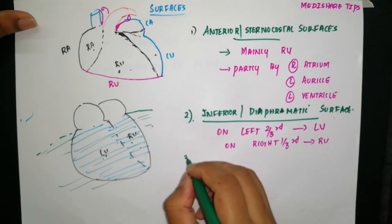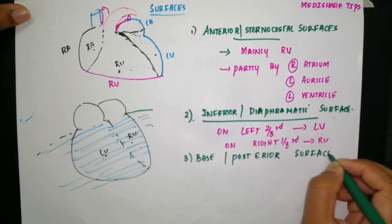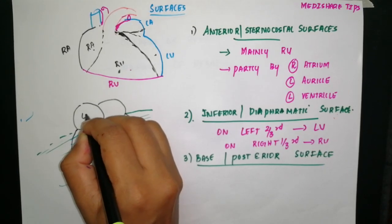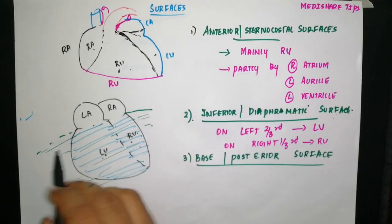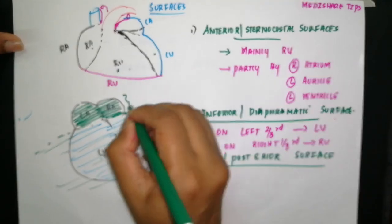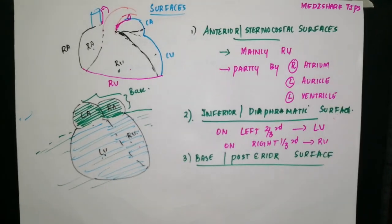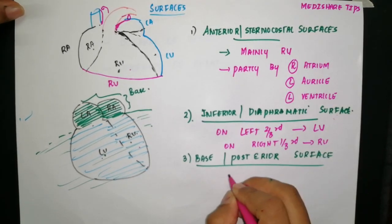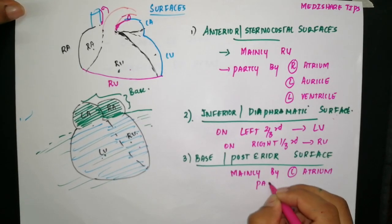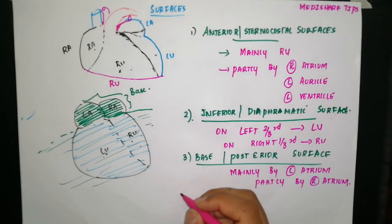The next surface is the base or posterior surface. Looking at the posterior aspect, the diaphragmatic surface occupies the lower portion, and the remaining upper part forms the posterior surface or base. The base or posterior surface is formed mainly by the left atrium and partly by the right atrium.